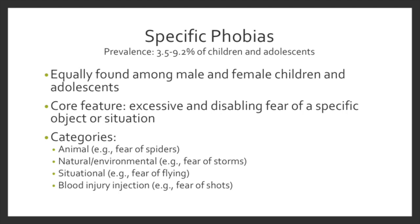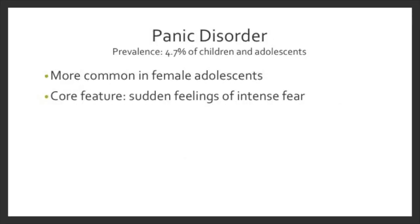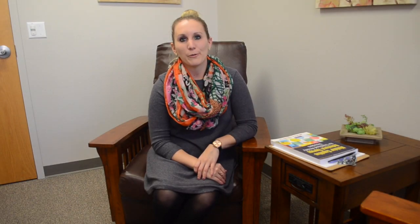Specific phobias are equally found among male and female children and adolescents. It is characterized by excessive and disabling fear of a specific object or situation, organized into categories including animal, natural and environmental, situational, and blood-injury-injection. Panic disorder is slightly more common in female adolescents and is characterized by sudden feelings of intense fear that can seem to come out of the blue, causing panic attacks.